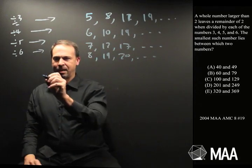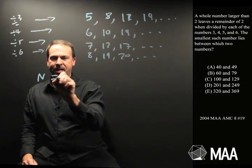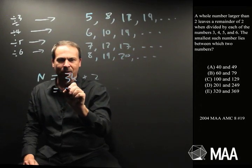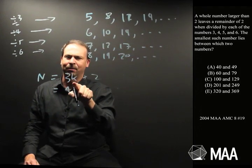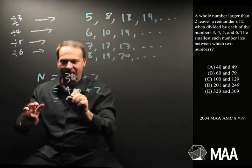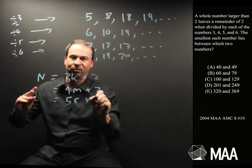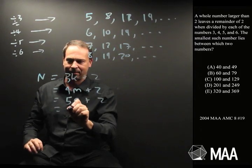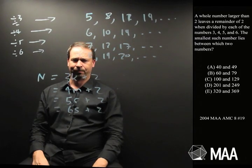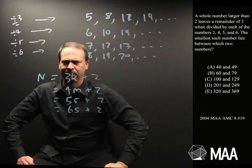Well, what if this mysterious number... I'll just write N for number. I know it's a multiple of 3 plus 2 more. I also know it's equal to a multiple of 4 plus 2 more. It's also a multiple of 5 plus 2 more. It's also a multiple of 6 plus 2 more. I don't know if that's helpful.